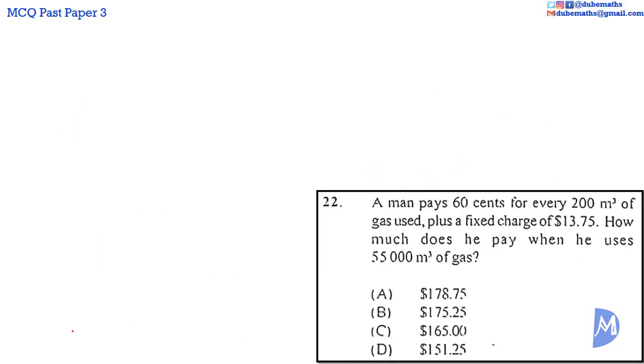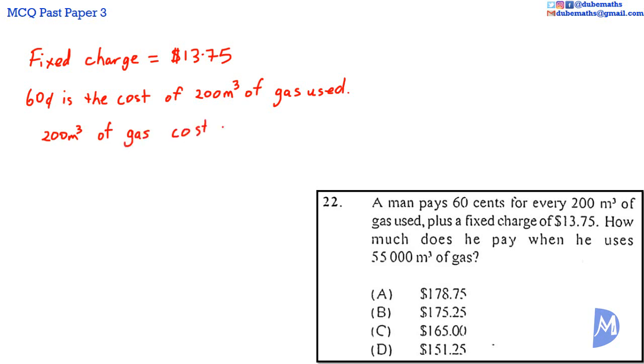Question 22. Fixed charge is equal to $13.75. Also, $0.60 is the cost of every 200 meter cubed of gas used. He used 55,000 meter cubed.